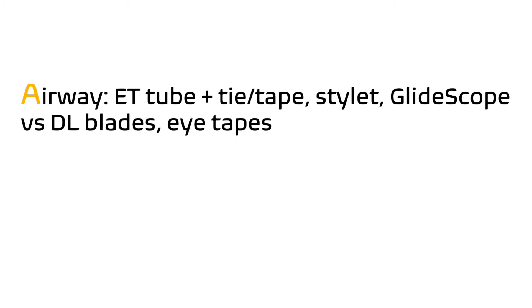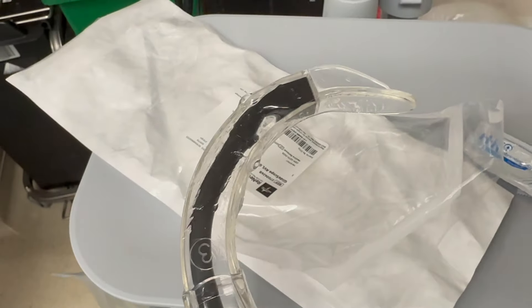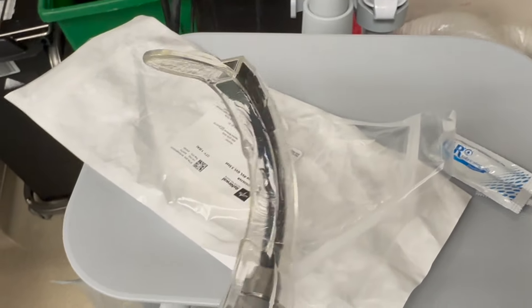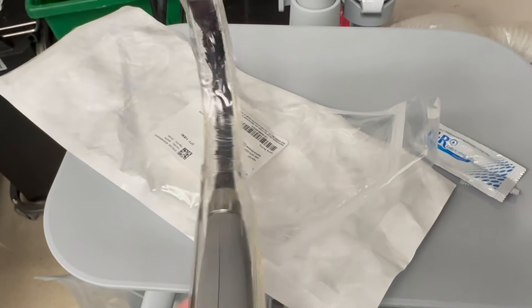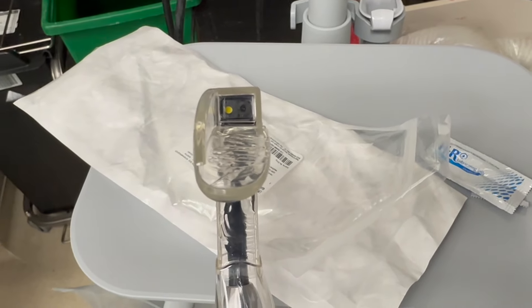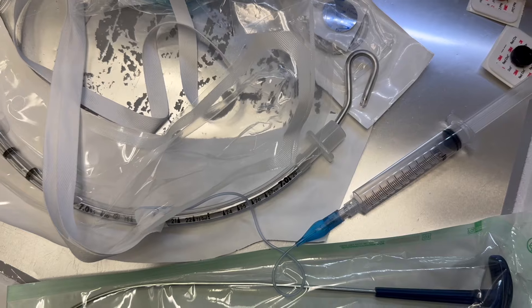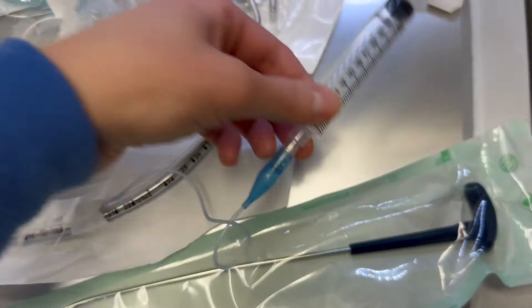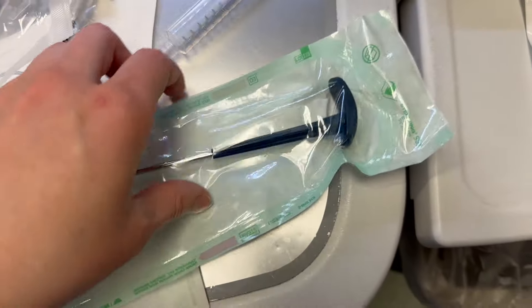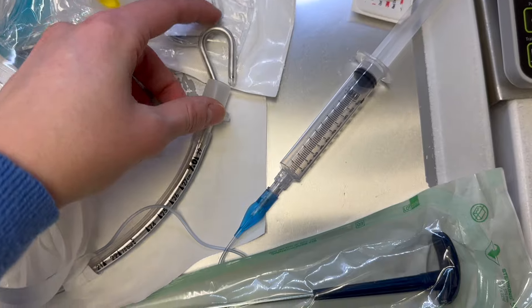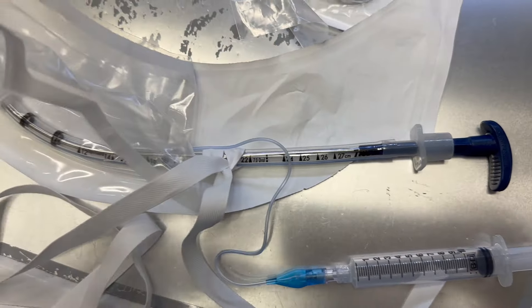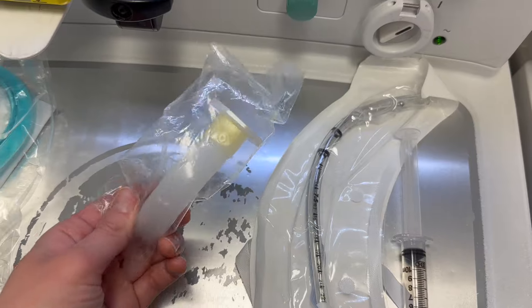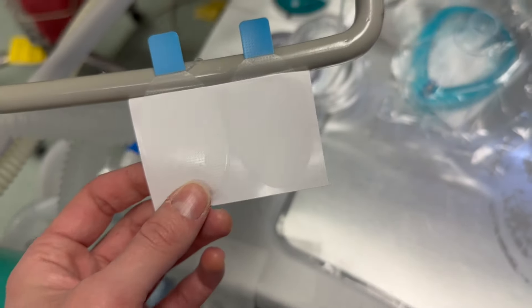Airway is next, which includes your ET tube plus the securing tie or tape, a stylet, a GlideScope or your Mac or Miller blades, as well as the eye tapes you need for intubation. My case is going to be a GlideScope case. I have prepared the GlideScope here by applying a size 3 cover and lubing up the cover, making sure to avoid the camera. I will also make sure to grab a GlideScope stylet. I've chosen a 7.0 tube, applied a tie, and checked the cuff using a 10cc syringe. Here is the GlideScope stylet now in place. I also make sure to have an oral airway out as well as patient eye tapes.